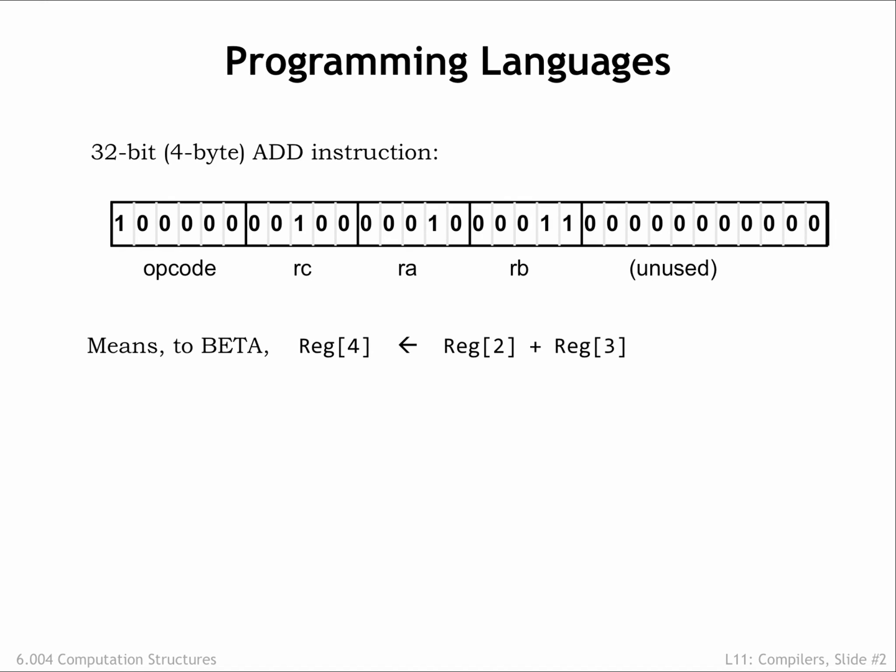Today we're going to talk about how to translate high-level languages into code that computers can execute. So far we've seen the beta ISA, which includes instructions that control the datapath operations performed on 32-bit data stored in the registers. There are also instructions for accessing main memory and changing the program counter.